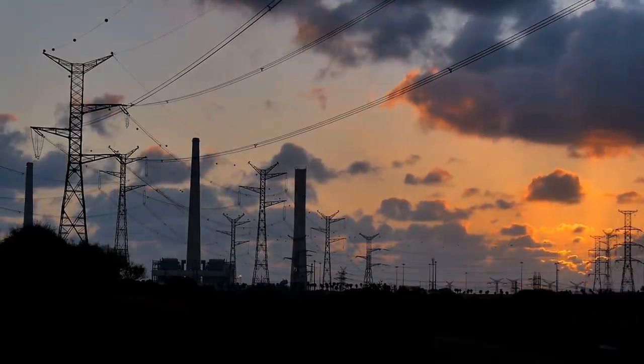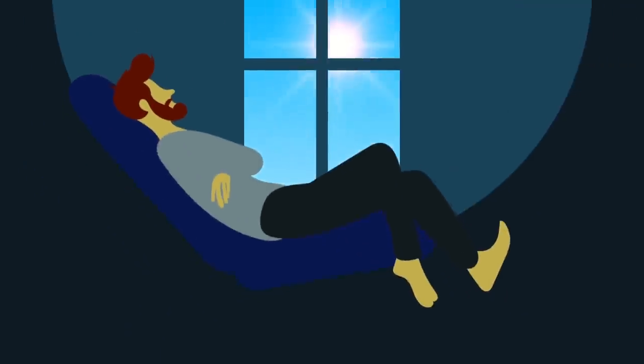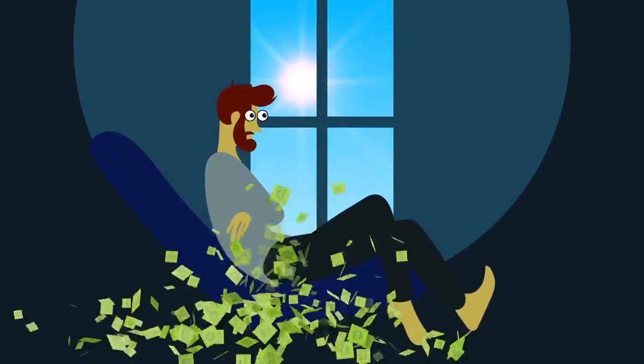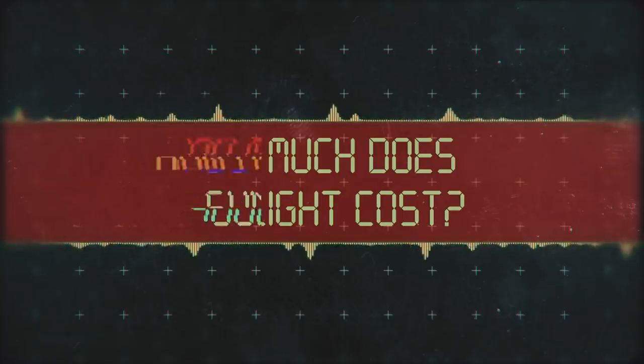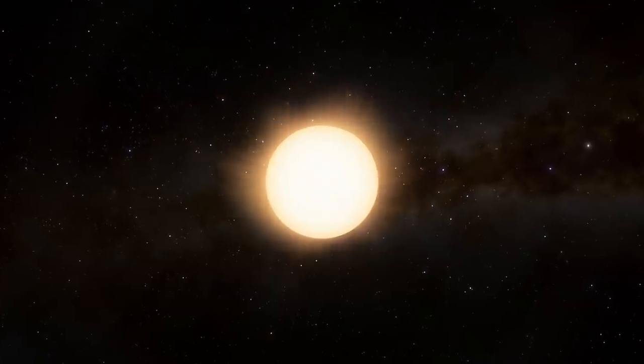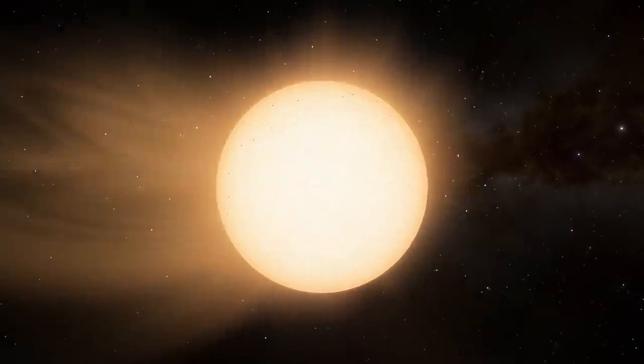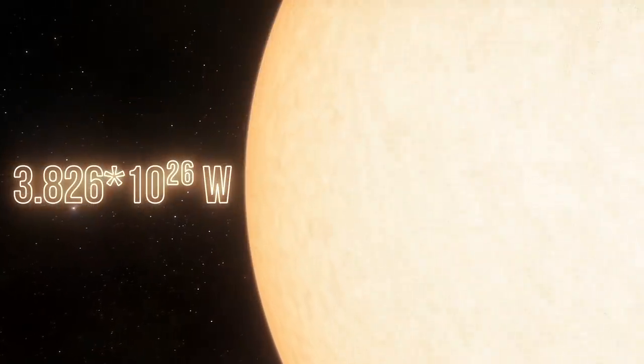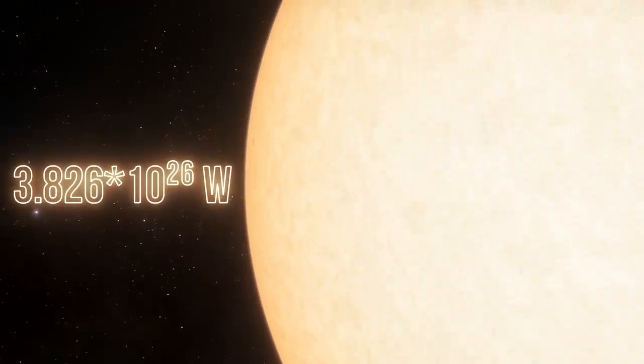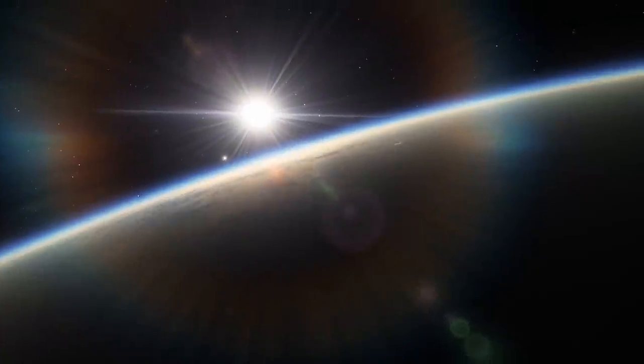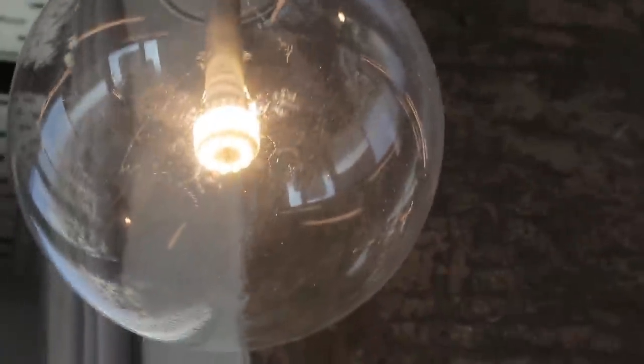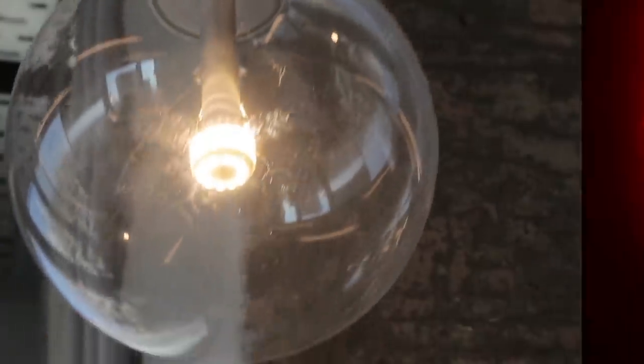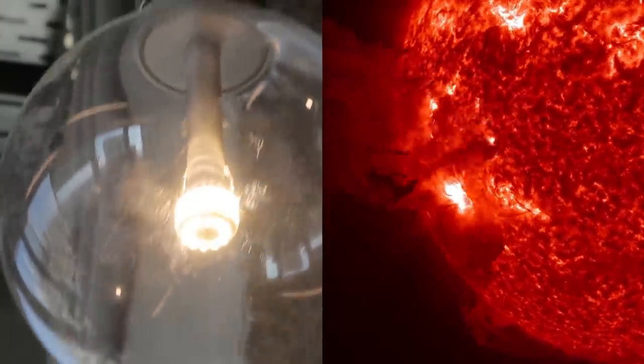We all pay our electricity bills. Imagine having to pay for sunlight as well. The sun shines on our planet with a power output of 3.8 times 10 to the power of 26 watts. And that's a lot. Let's calculate how many bulbs are needed to replicate the brightness of the sun.